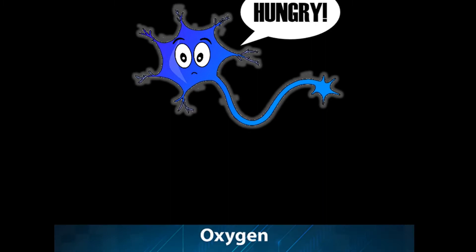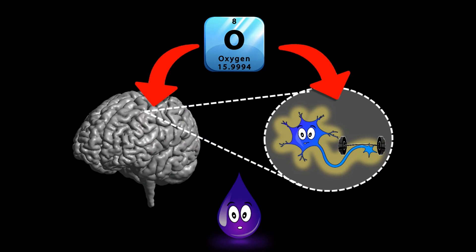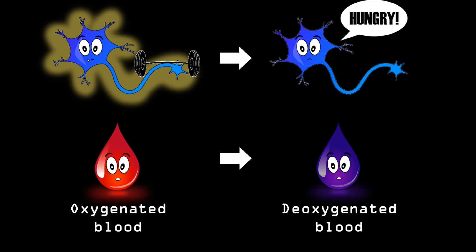And it is oxygen that has some properties that can really help us out here. When an area is active, it uses the oxygen, resulting in more blood without oxygen. In other words, it contains deoxygenated hemoglobin.